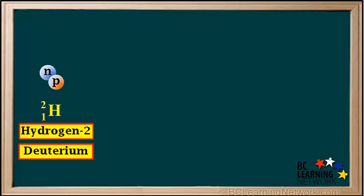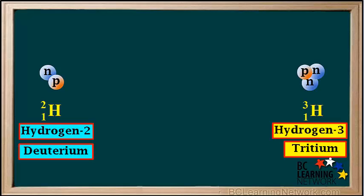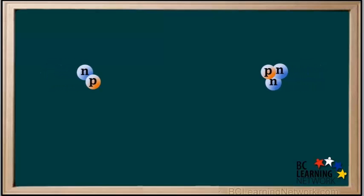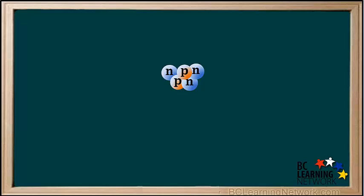We'll start with a hydrogen 2, or deuterium nucleus, with one proton and one neutron. And a hydrogen 3, or tritium nucleus, with one proton and two neutrons. We'll see what happens when these two nuclei move toward each other and collide. As these two nuclei collide, a neutron is emitted and energy is released.